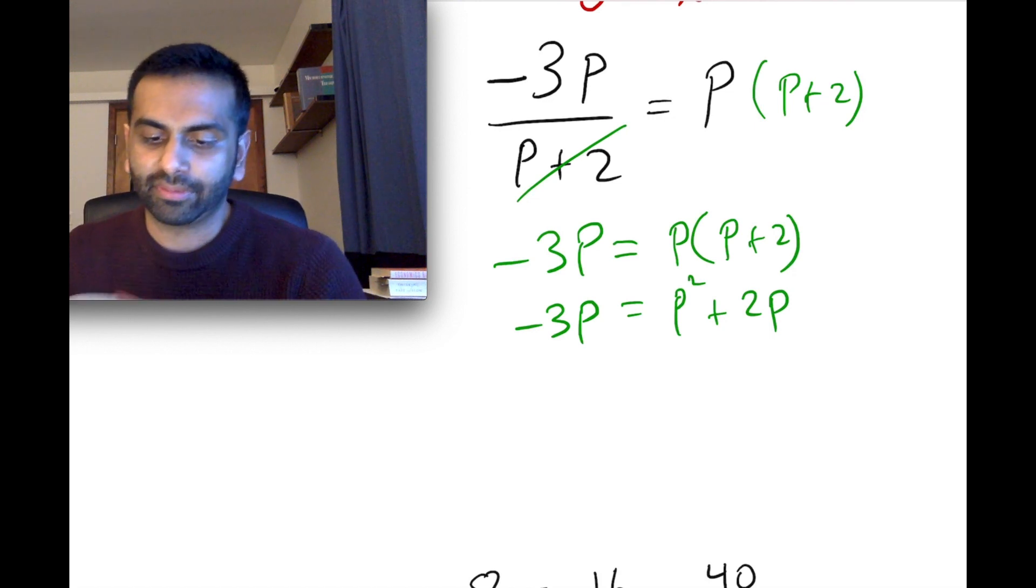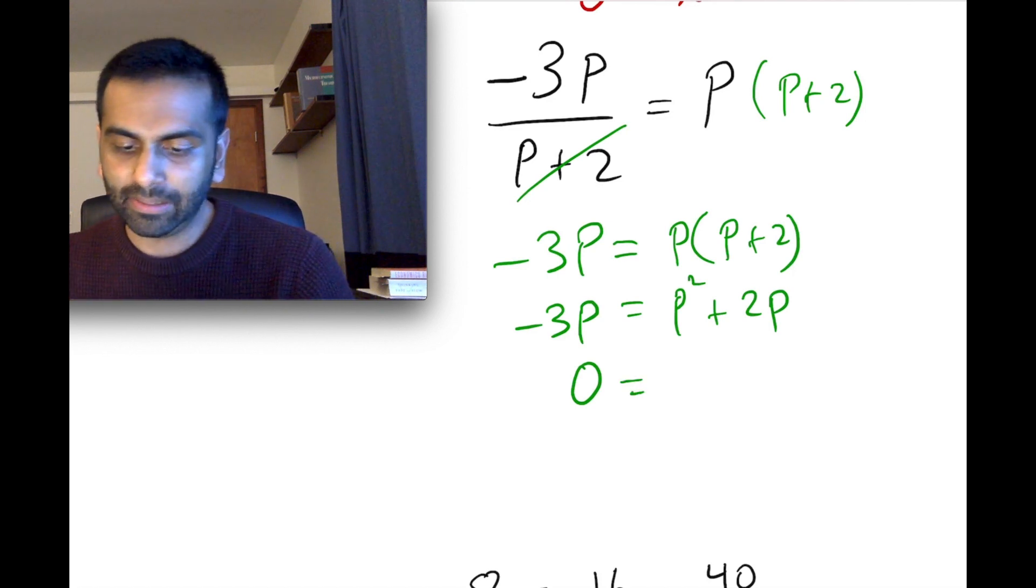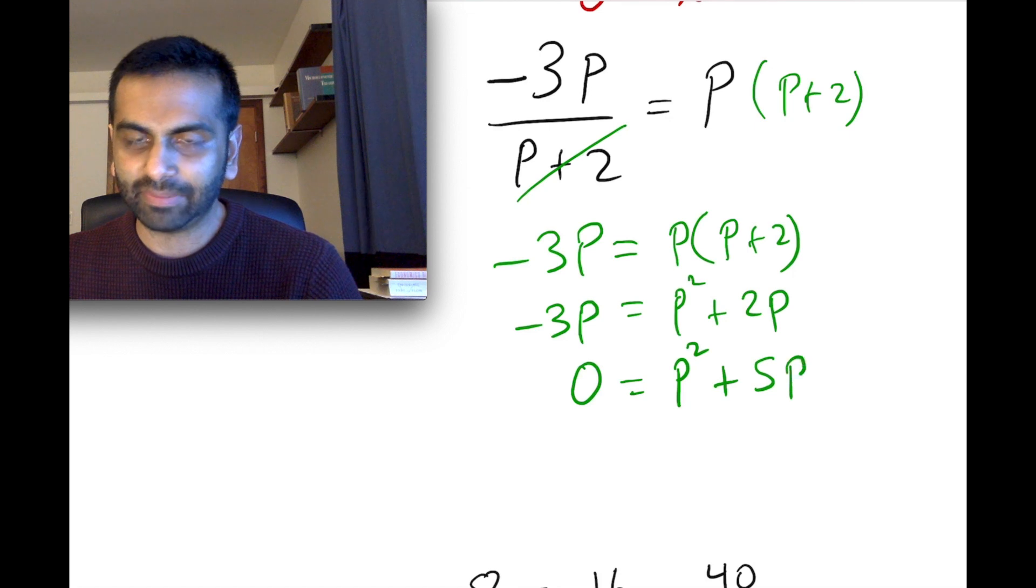So p times p is p squared plus p times 2 is 2p. And then here you have negative 3p. And so now again, just like with any quadratic, you want to keep everything on the same side. So we can now add 3p to both sides.